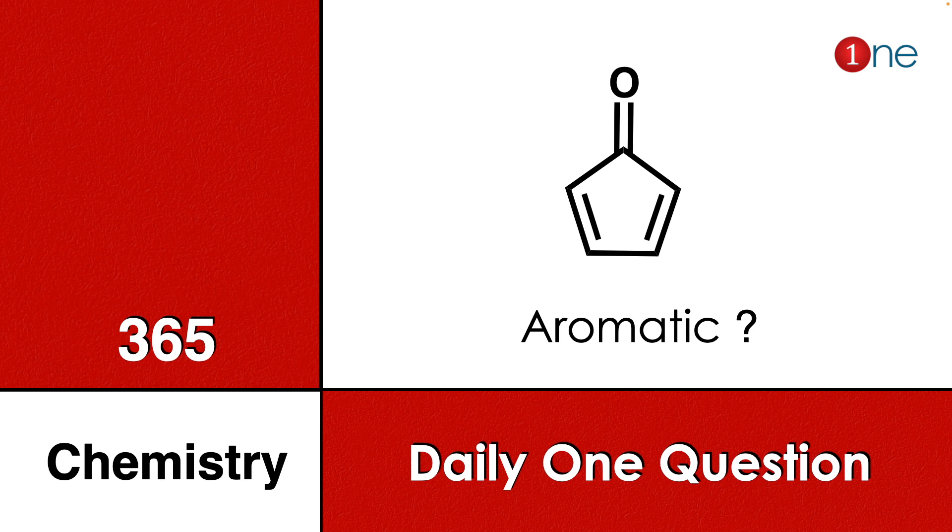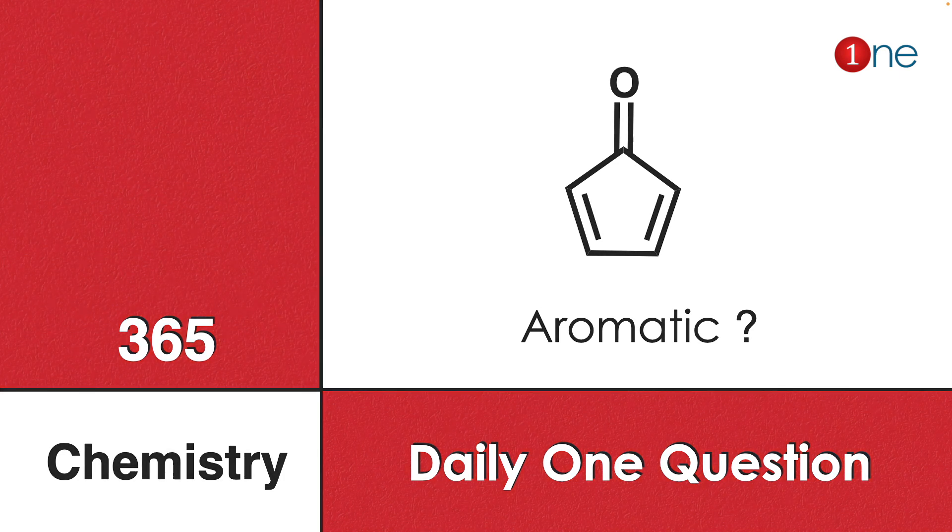Welcome to One Chemistry. This is 365 Chemistry Series, daily one question for you. Here, a five-membered heterocycle is given, which is cyclopentadienone with two alkene bonds. A diene is there. You have to guess whether the given compound is aromatic or not.